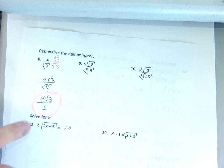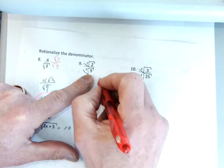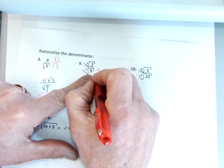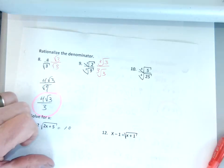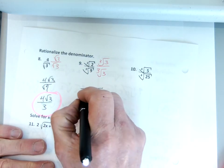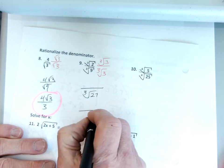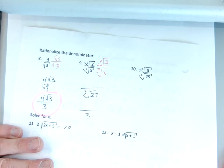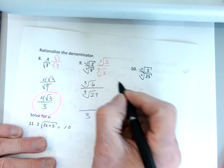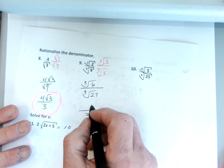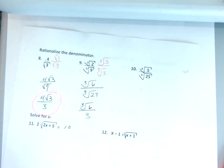Number nine: I need to make this into a perfect cube root, which is 27. So I multiply by the cube root of 3 over the cube root of 3, so that I can make the denominator into the cube root of 27, which is just 3. The numerator is just going to be the cube root of 6, and of course there's nothing you can do with the cube root of 6. So I keep it as the cube root of 6 over 3, and that is my answer.